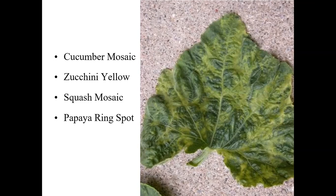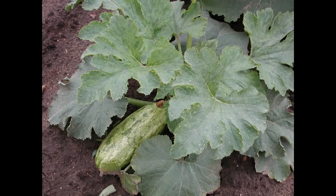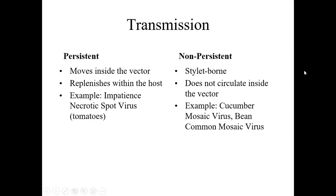The viruses commonly found when samples are sent to the lab include cucumber mosaic, zucchini yellows, squash mosaic, and papaya ring spot. A mottled zucchini impacted by virus is not going to be marketable. The important thing to know about viruses is the type of transmission. Viruses are transmitted by an insect, often aphids, but it could be others such as western flower thrips. With a persistent virus, it moves inside the vector, lives long-term inside that vector, replenishes itself from within the host, and wherever that insect feeds, it will continue to infect new leaves and new crops.